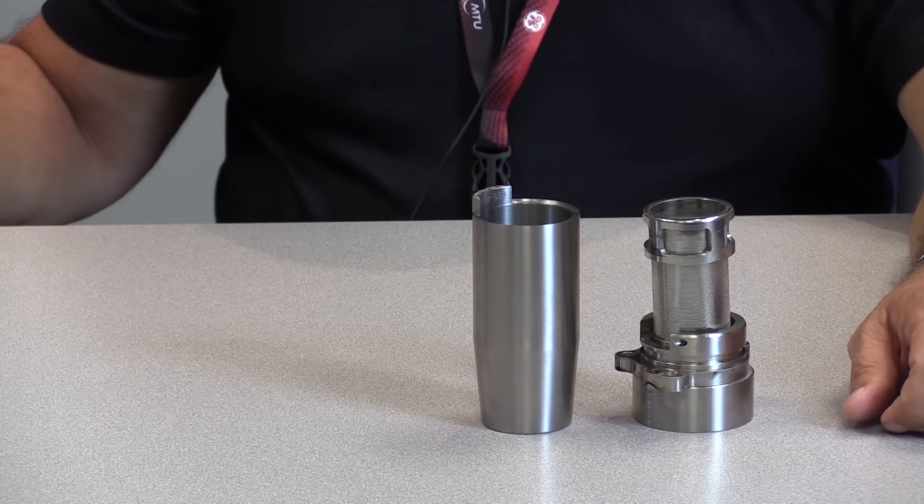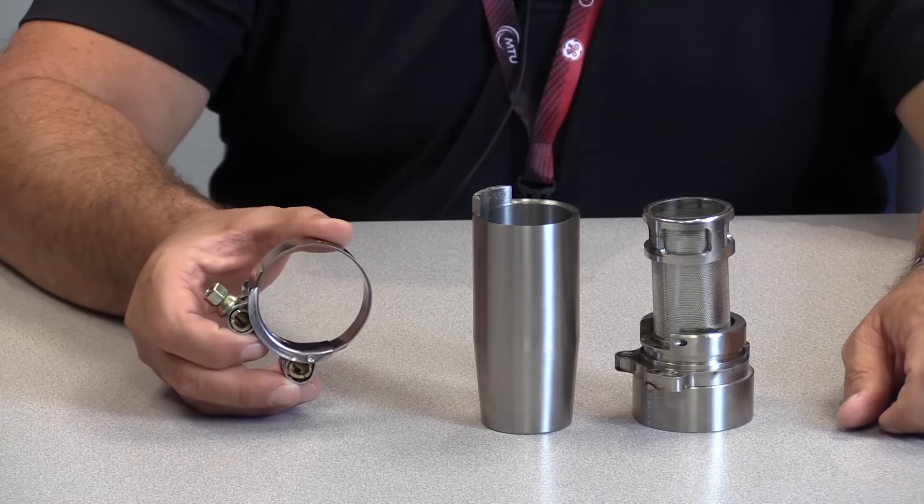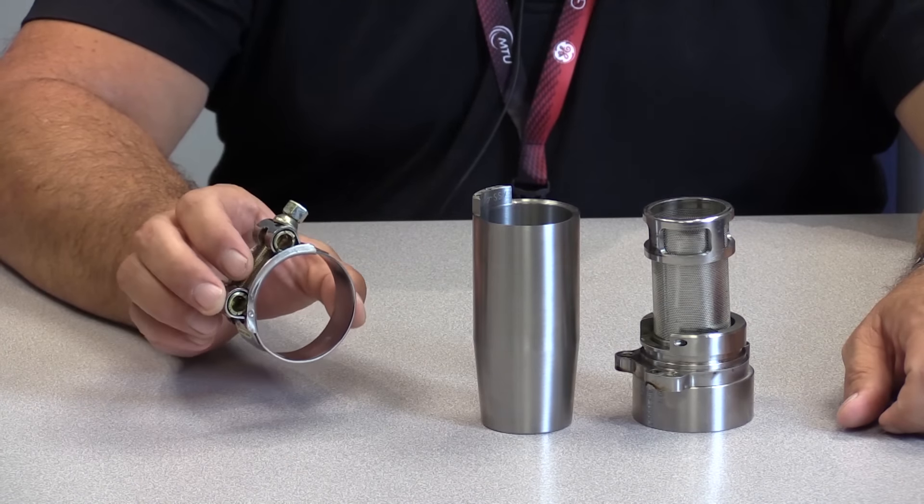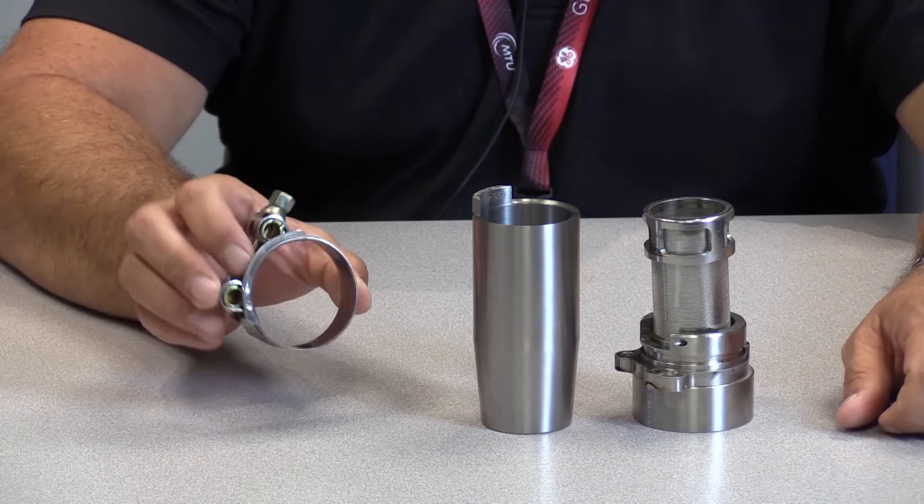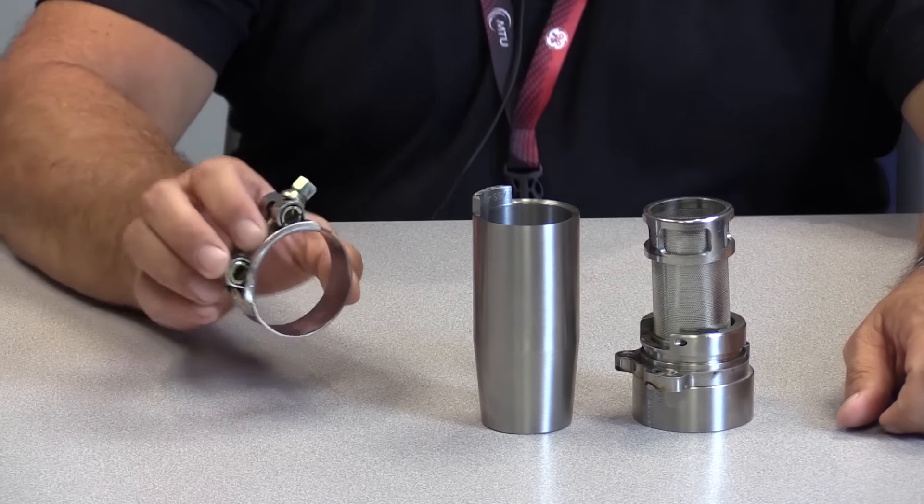And then, also, you'll want to find some clamps. Your services engineering can provide suitable part numbers for clamps. You'll see what these are for here in just a moment.